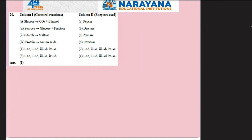A question based on enzyme-catalyzed reactions. Glucose is fermented to give ethanol and CO2 — the enzyme responsible is zymase (1 matches with C). Sucrose giving glucose and fructose is inversion of sucrose — the enzyme responsible is invertase (2 matches with D). Starch to maltose — enzyme responsible is diastase (3 matches with B). Protein to amino acids — enzyme responsible is pepsin. The correct answer is the first option.